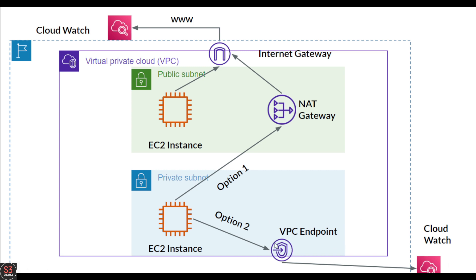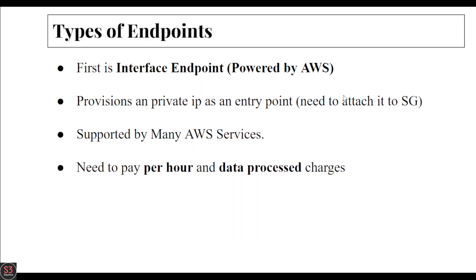There are two types of VPC endpoints. The first is the Interface Endpoint, powered by AWS PrivateLink. It provisions a private IP as an entry point, and that private IP needs to be attached to a security group. It is supported by many AWS services. The interface endpoint is not free — you pay per hour and also pay for data processing charges.